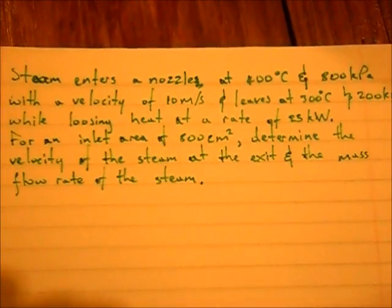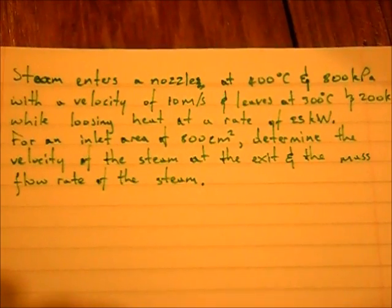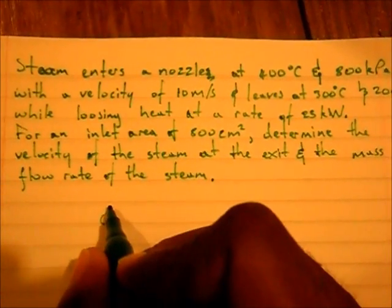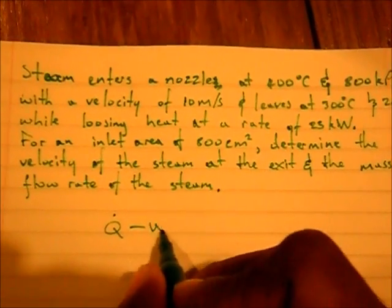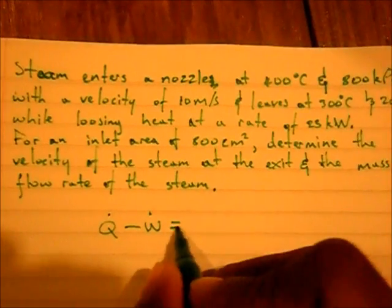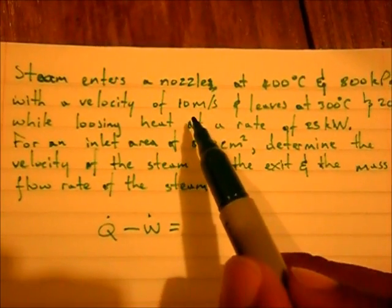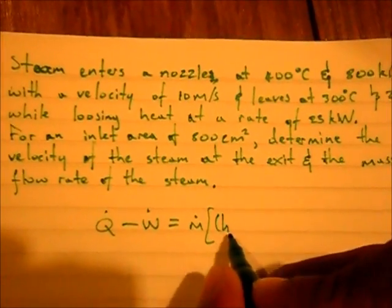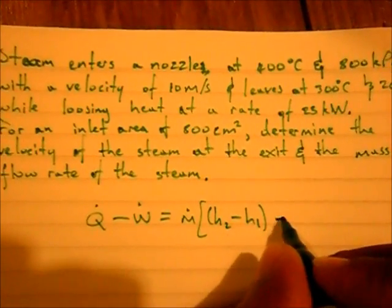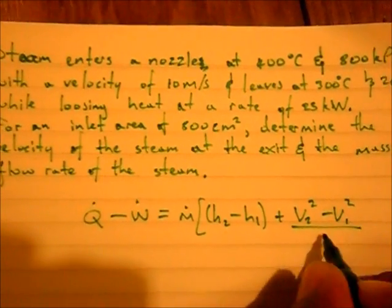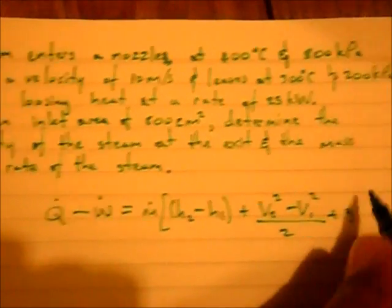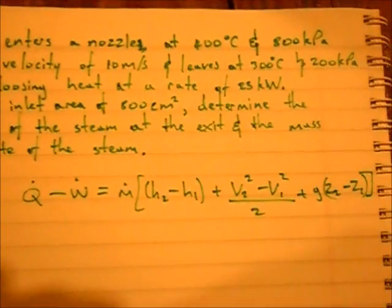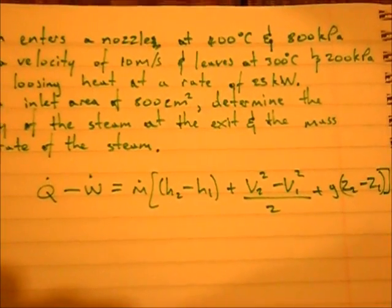Well anyways, the first thing to do when working on a thermodynamic question is to always write the first law of thermodynamics, which simply states Q dot minus W dot - and this is a flow equation because it's mentioning flow rate - equals m dot times (h2 minus h1) plus (V2 squared minus V1 squared) over 2 plus g times (z2 minus z1), and that is your first law of thermodynamics flow rate formula.